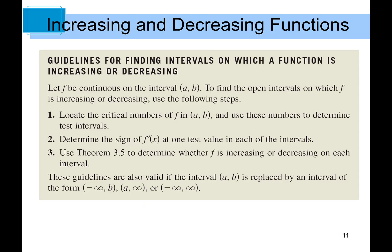Let's review the procedures for finding intervals on which a function is increasing or decreasing. Assuming f is continuous on an open interval (a, b): Step one, locate the critical numbers by finding the derivative, setting it equal to zero, and use those numbers to determine test intervals. Step two, determine the sign of f'(x) at one test value in each interval. Step three, use the theorem to determine whether f is increasing or decreasing on each interval. These guidelines are also valid for intervals involving infinities.